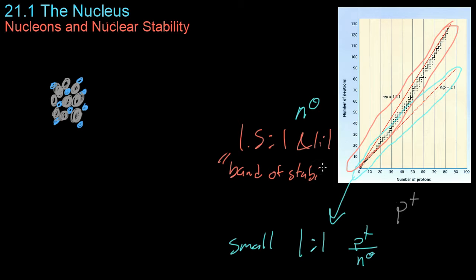This is where most of the stable isotopes exist, the ones that last thousands and thousands to millions of years.